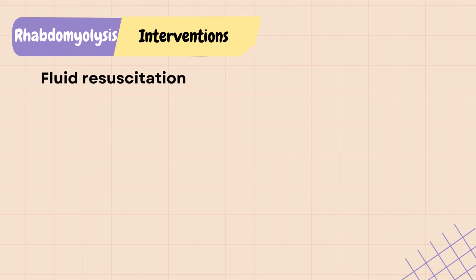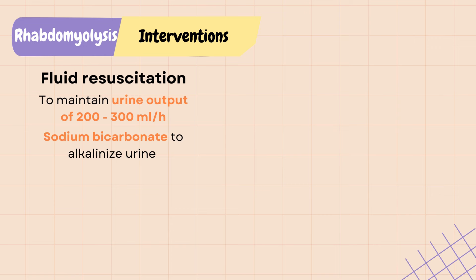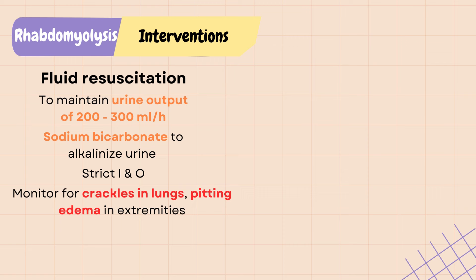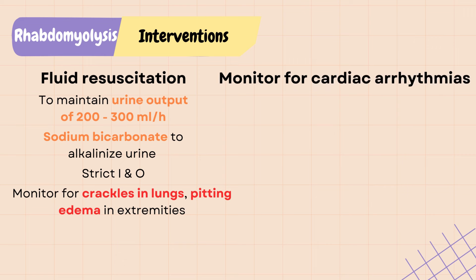The goal of rhabdo treatment is to maintain adequate fluid resuscitation and prevent acute kidney injury. Patients may receive up to 10 liters of fluid per day to maintain a urine output of 200 to 300 mL per hour until stabilized. Sodium bicarbonate may be added to IV fluid to alkalinize the urine and prevent precipitation of uric acid and myoglobin. Strict intake and output should be maintained, and patients should be monitored for signs of fluid overload such as crackles in the lungs and pitting edema in extremities.